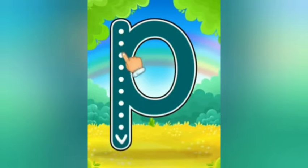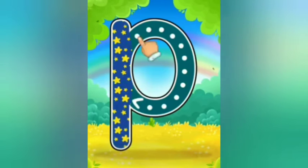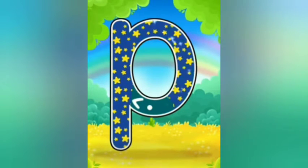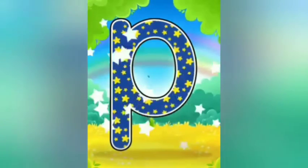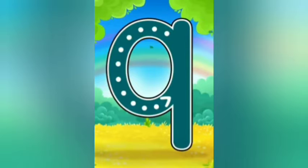Next small letter is letter P. P is for parrot. Start making a standing line up to down and make a curve. Small letter Q. Q is for cushion. Make a circle and now make a standing line.